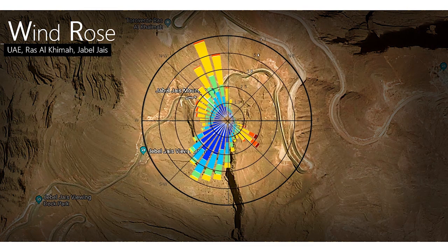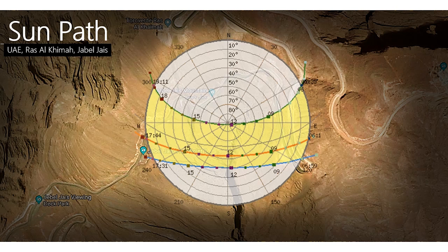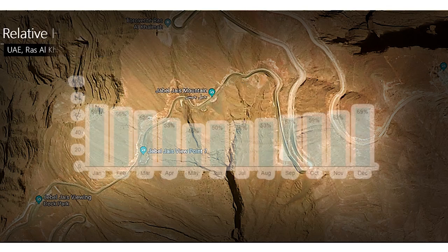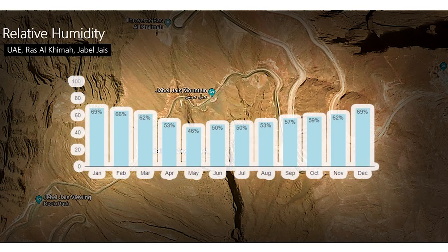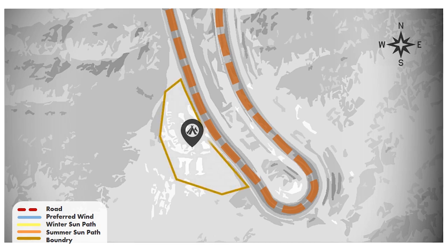Moving to the climate characteristics: the wind rose showed that wind flows from the northwest direction in UAE, while the sun path showed sun movement over the year for summer and winter. Ras Al Khaimah has a hot humid climate and temperatures can reach up to 45°C in summer and decrease to 11°C in winter. Relative humidity can reach up to 69% in January and December. Concluding from this weather data, the site analysis shows accessibility, site boundaries, summer and winter sun paths, and the preferred wind direction.